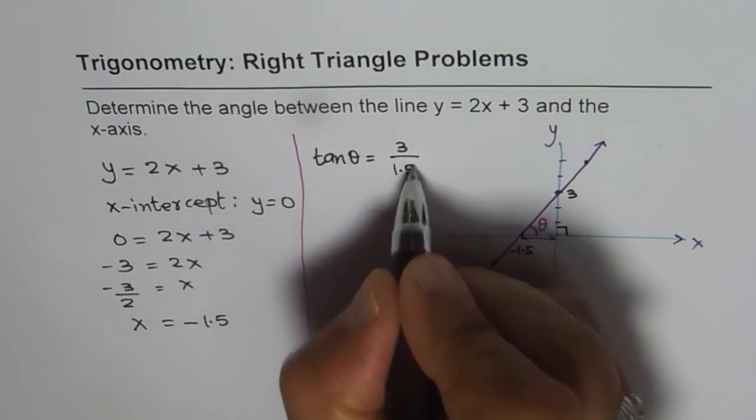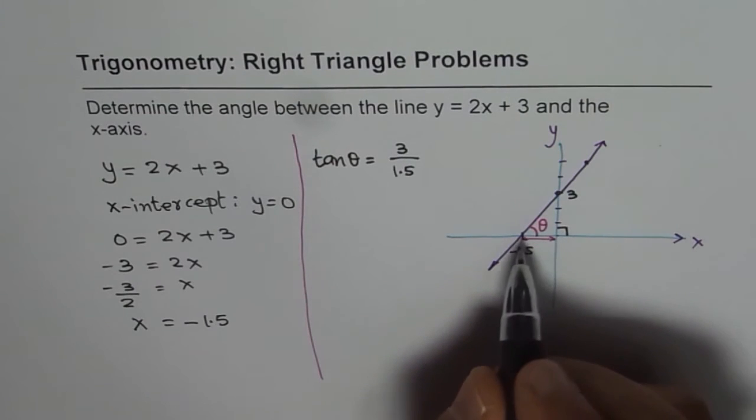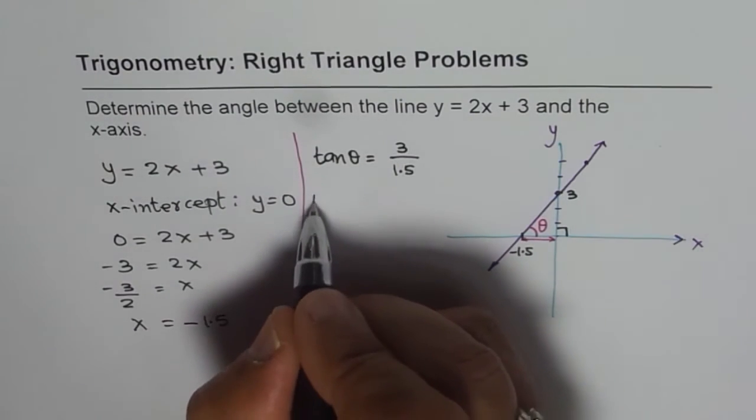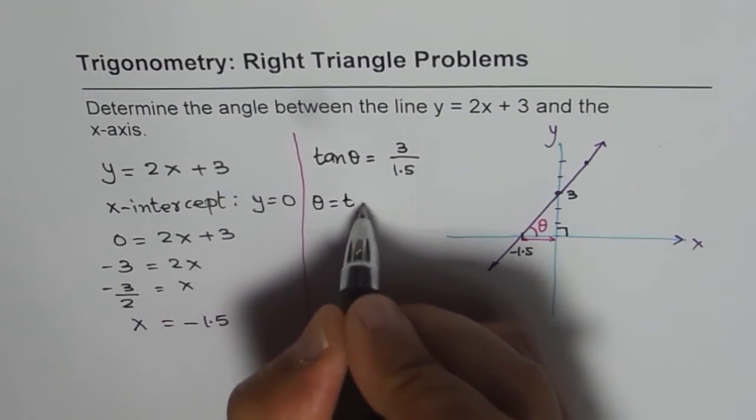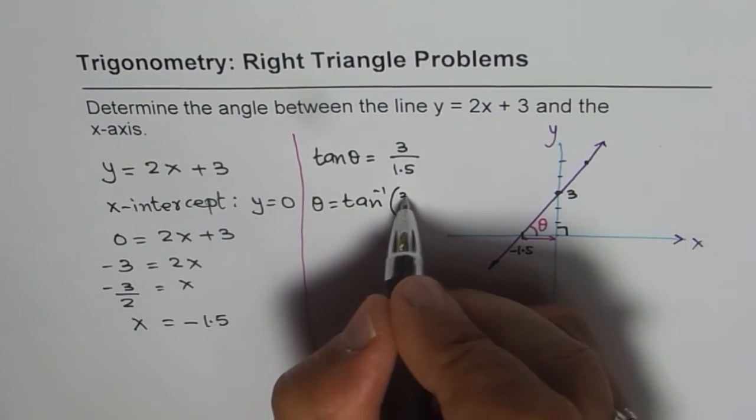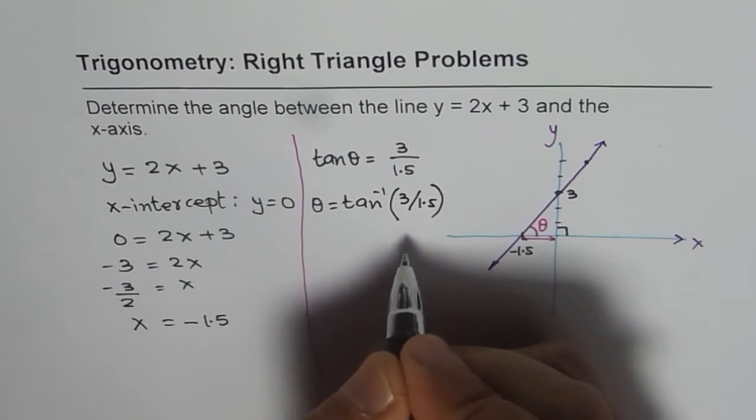Remember, the distances are always positive. From here to here, it is positive, 1.5. So theta will be equal to tan inverse of 3 divided by 1.5.